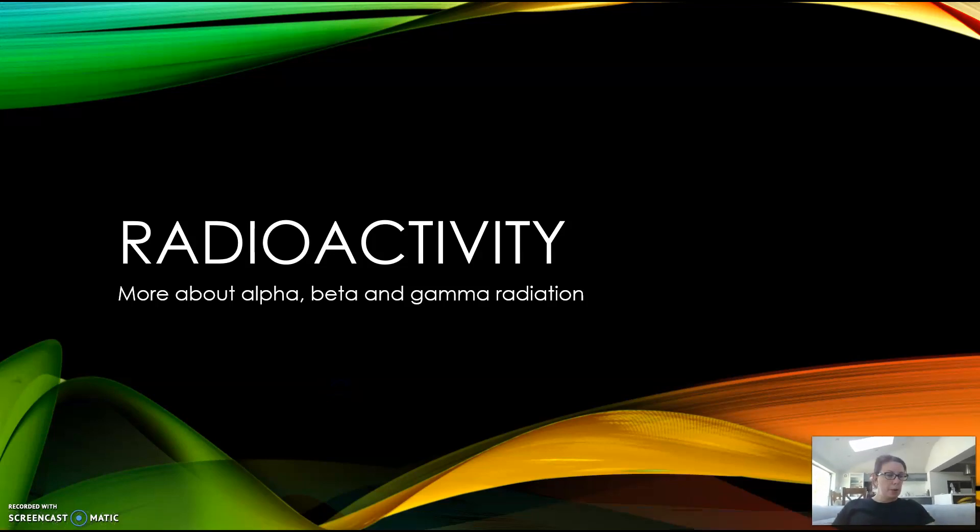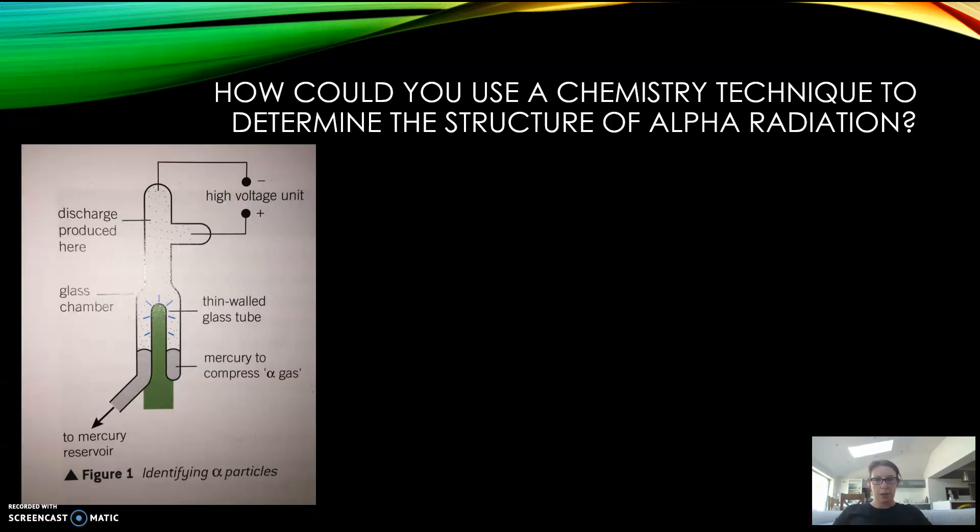Hi everyone, so today we're doing 26.3, more about alpha, beta and gamma radiation. I want you to think about how can you use a chemistry technique to determine the structure of alpha radiation. Some of you doing chemistry might have seen something like this before.